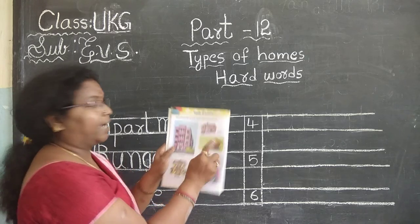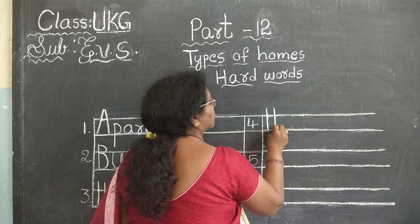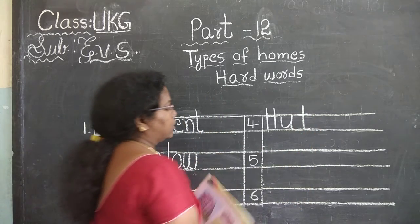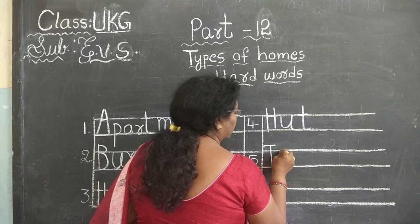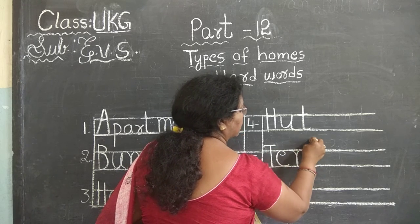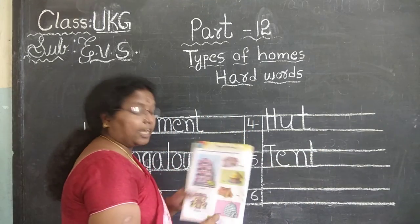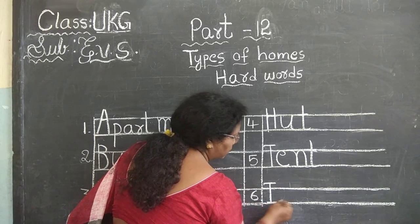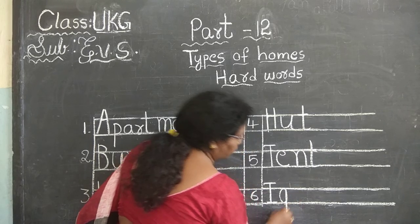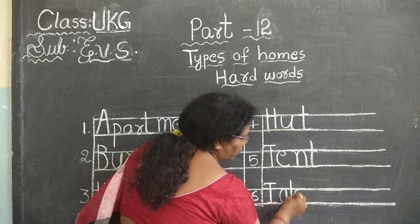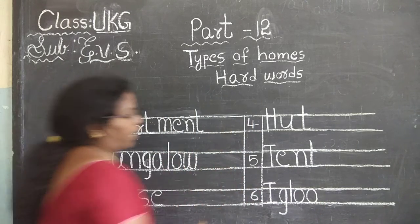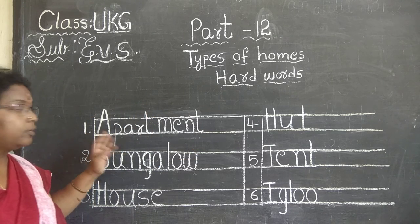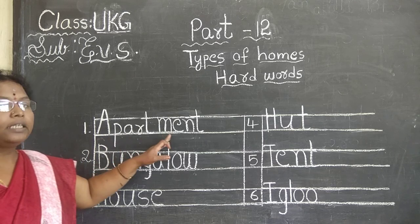Next, what is the spelling? What is this? Hut. What is the spelling of hut? H-U-T. Hut. Next. Tent. T right from the top. T-E-N-T. Tent. Next, what is the last spelling? See here. I-G-L-O-O. Capital I. G should come down, circle in two lines. I-G-L-O-O. Igloo. See children, listen carefully when you are writing a sentence, you have to give finger space. When you are writing only hard words, you should not give any finger space. You have to write it close together.